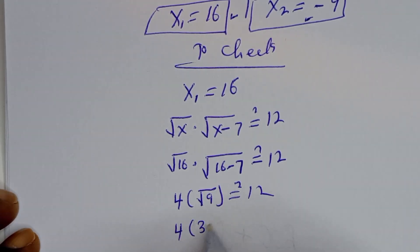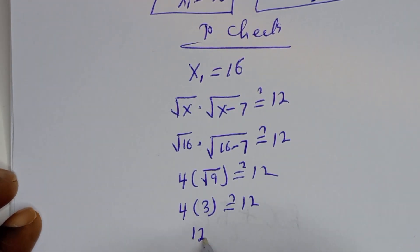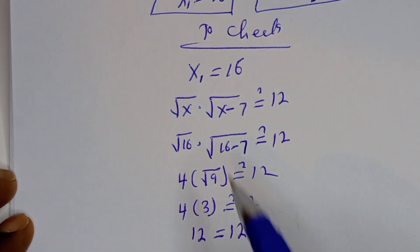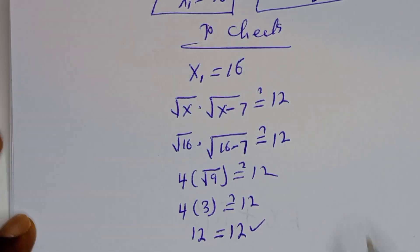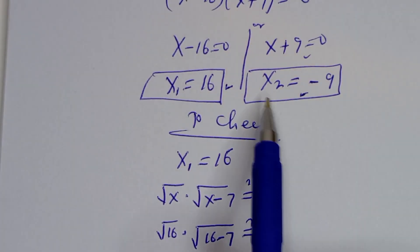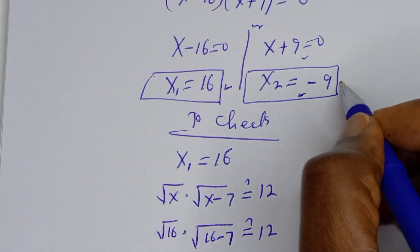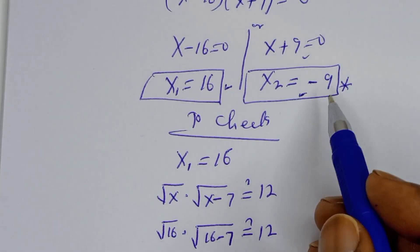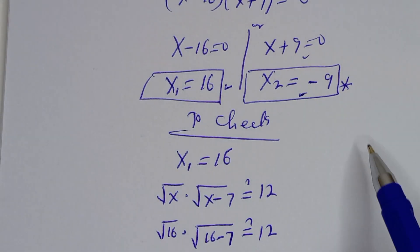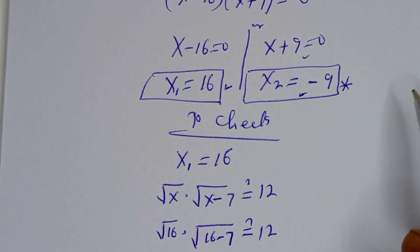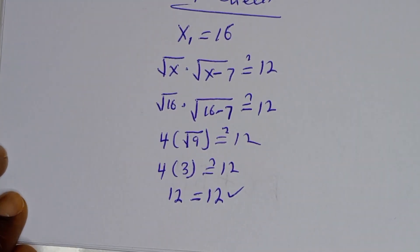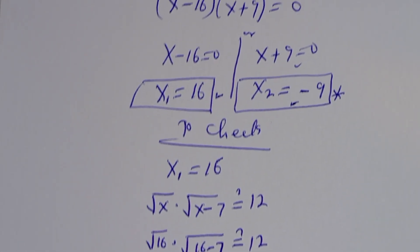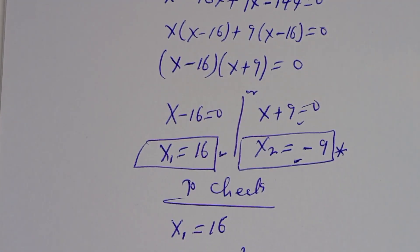Square root of 9 is 3, so the left-hand side is 4 times 3, which equals 12 — equal to the right-hand side 12. This is true at s equals 16. For s equals minus 9, this is not valid as it puts negative values inside both radicals. Thank you for watching. Don't forget to like, share, comment, and subscribe. Bye bye.